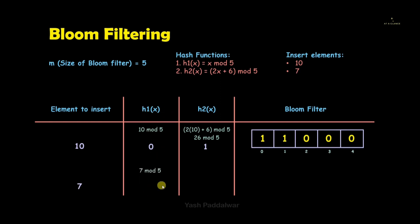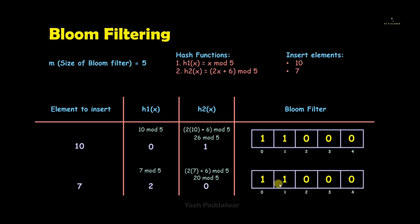Next, element 7: h1(7) = 7 mod 5 = 2. For h2(7): 2(7) + 6 = 20, and 20 mod 5 = 0. We take the same bloom filter and make changes to it. Hash 1 value is 2, so at index 2 we set the value to 1. Hash 2 value is 0, but index 0 already has value 1. This is the final bloom filter after inserting both elements 10 and 7.